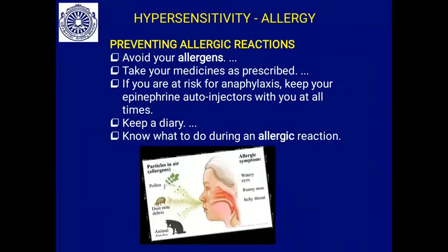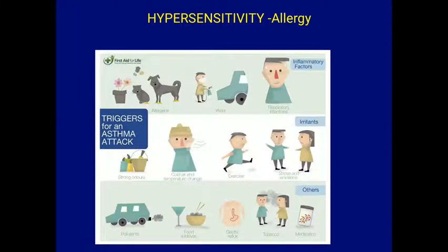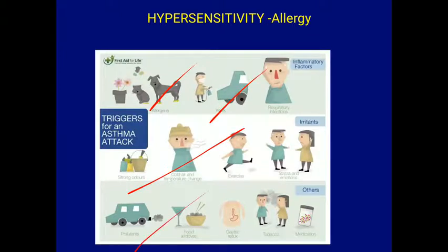To avoid allergic reactions, we must identify which substances our body is allergic to and take proper care. Allergic asthma is a common phenomenon triggered by pets, automobile emissions, cold weather, diet, and morning air. We must find out why we are getting allergic asthma and be careful about all these triggers. Thank you.